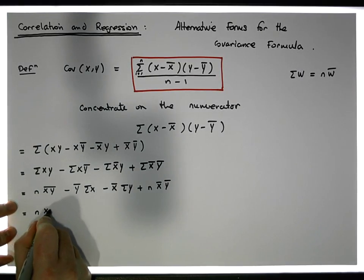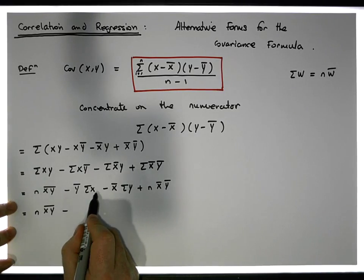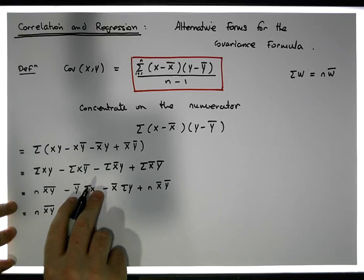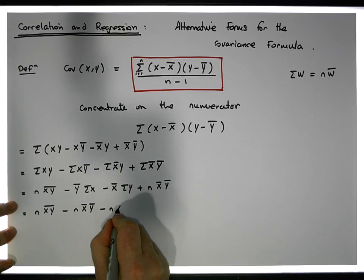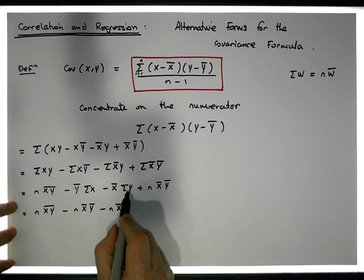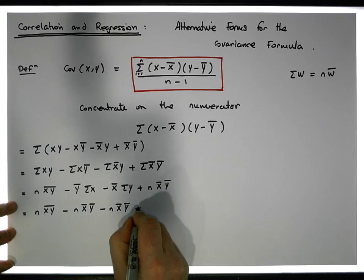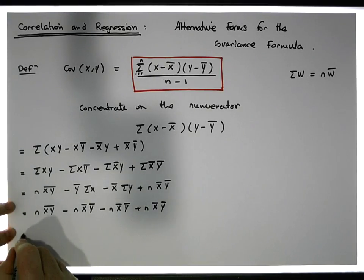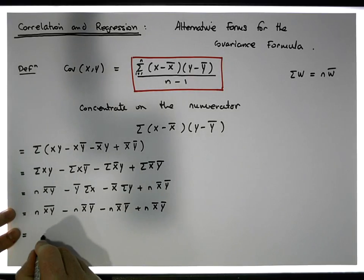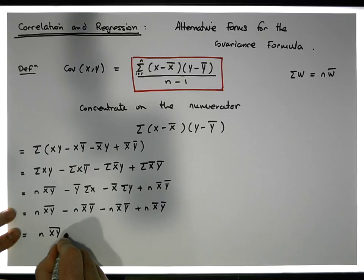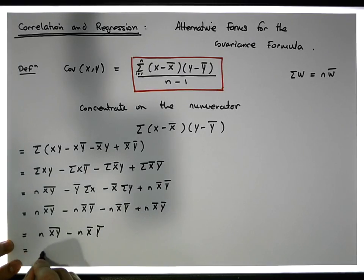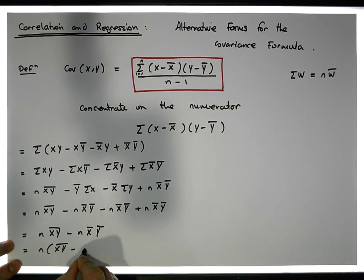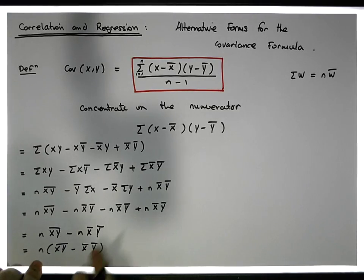Now substituting: Σx = nx̄ and Σy = nȳ. So we get n times x̄y̅ minus ȳ·(nx̄) which is n·x̄ȳ, minus x̄·(nȳ) which is also n·x̄ȳ, plus n·x̄ȳ. The two negative n·x̄ȳ terms and the positive n·x̄ȳ combine to give minus n·x̄ȳ. The numerator therefore becomes n times (x̄y̅ − x̄ȳ), converting it into a different form.